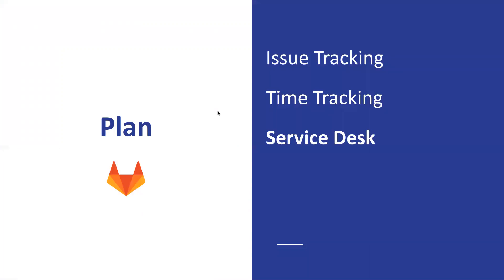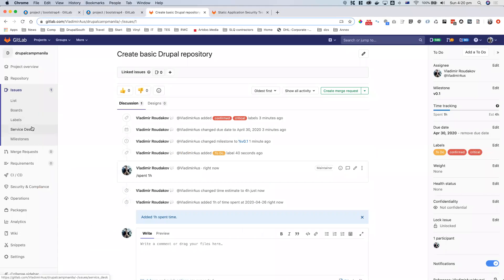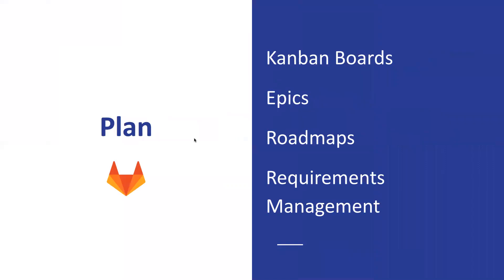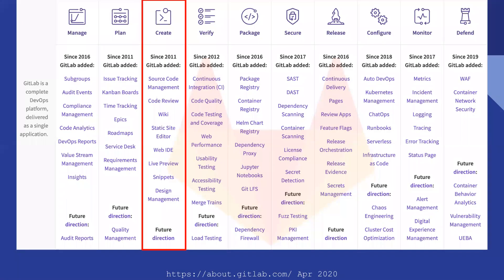There is also a service desk. If your company is running support, you can check out the service desk — it recently moved about a month ago from a paid to a free feature. Your client can email a specific email address, and you can have a specific board for your client here without showing them all your issues. There are also other things like Kanban, Epics, Roadmaps, and Requirement Management. The boards are quite generic and you can use them on waterfall or agile projects. That summarizes the planning section.